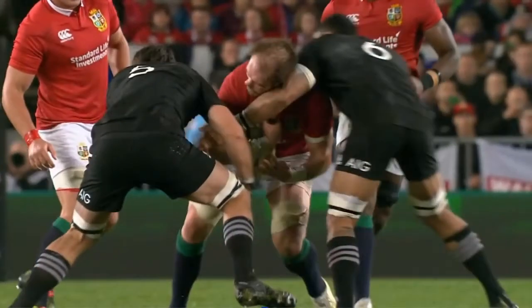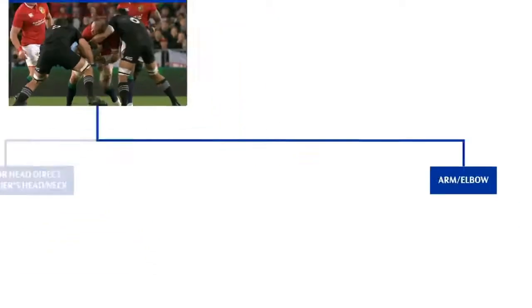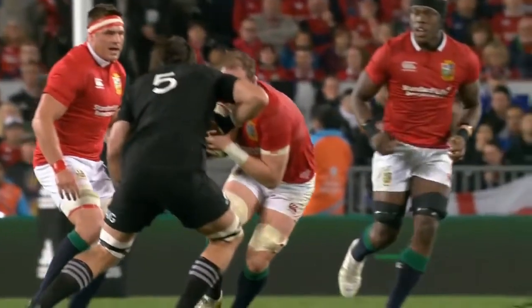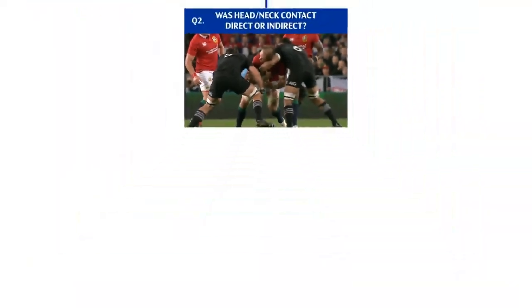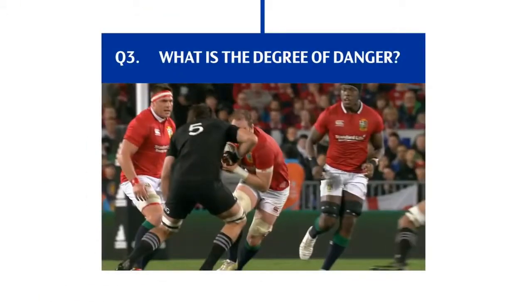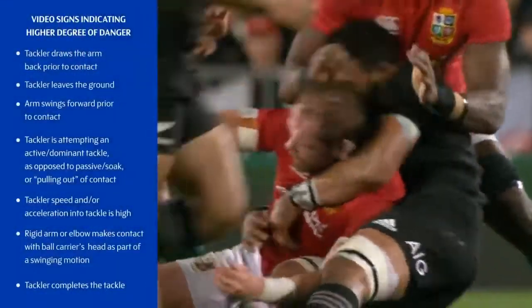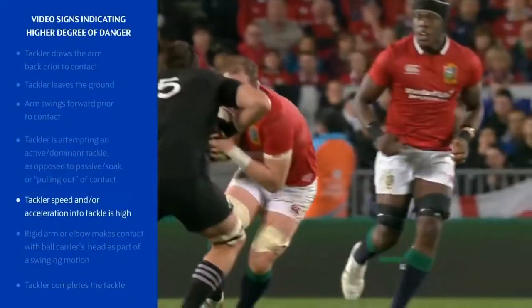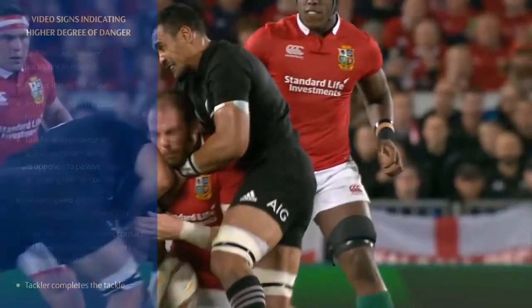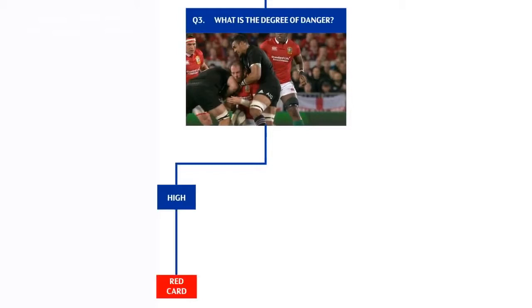In this example, the contact to the tackled player's head is from the upper arm of the tackler. The second question is whether the head or neck contact is direct or indirect. In this example, the head contact is direct. The match officials then ask: what is the degree of danger? In this tackle, the degree of danger is high, indicated by a dominant tackle attempt, the tackler accelerating into contact, and the tackler completing the tackle. For a high degree of danger, the initial decision would be a red card; if low, a yellow card.